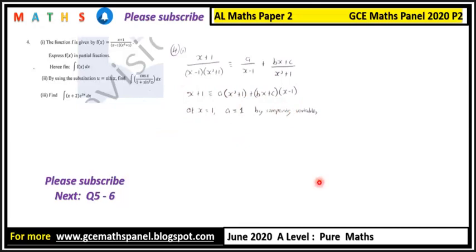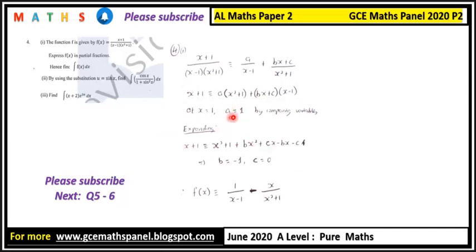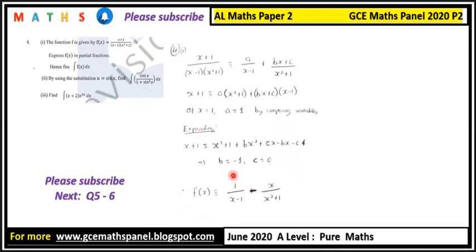So two equals two A, giving A equals one. Now expanding with A equal to one, we get x squared plus one plus Bx squared plus Cx minus Bx minus C. Comparing coefficients gives B equal to minus one and C equal to zero. Therefore f(x) is identical to one over (x minus one) minus x over (x squared plus one).